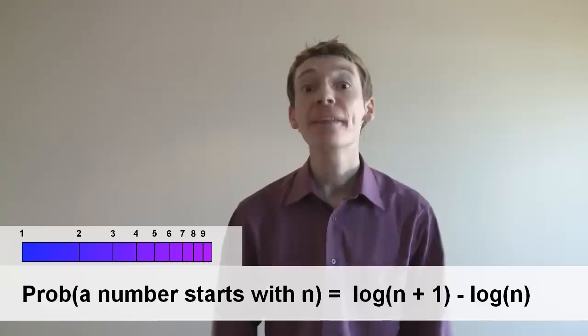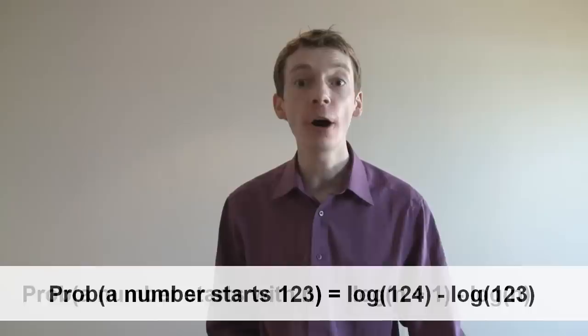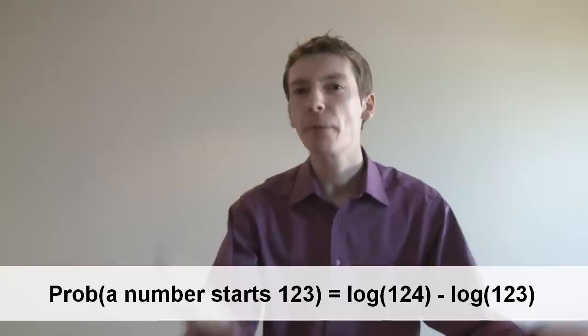Imagine I wanted to know the probability that a number starts with the string 1, 2, 3. Well, that's the log of 124 minus the log of 123, which is about 0.4%. And using this, you can start to work out the probabilities of digits appearing in other positions, like the second position, the third position. Although that quickly becomes 10% for each of the 10 digits 0 to 9.